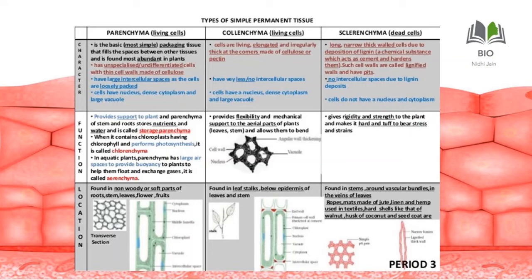Sclerenchyma has no intercellular spaces and no nucleus or cytoplasm — it is dead tissue. Its main function is to provide rigidity and strength to the plant. So simple permanent tissue is divided into three types: parenchyma, collenchyma, and sclerenchyma. Each has distinct characters and functions — parenchyma has intercellular spaces, collenchyma has thickening at the corners, and sclerenchyma has lignified walls throughout.